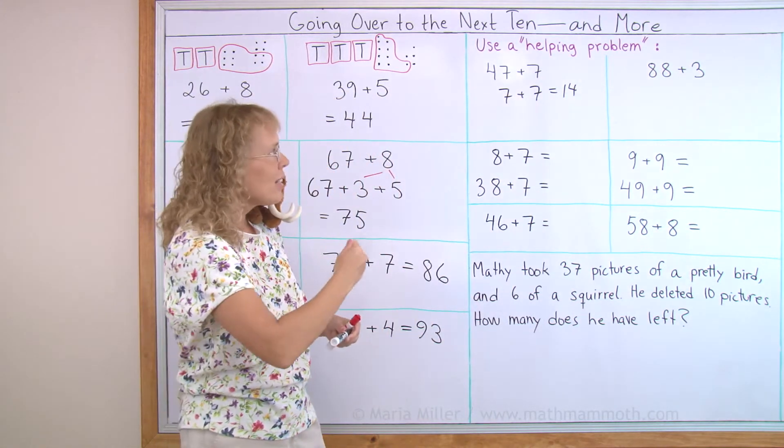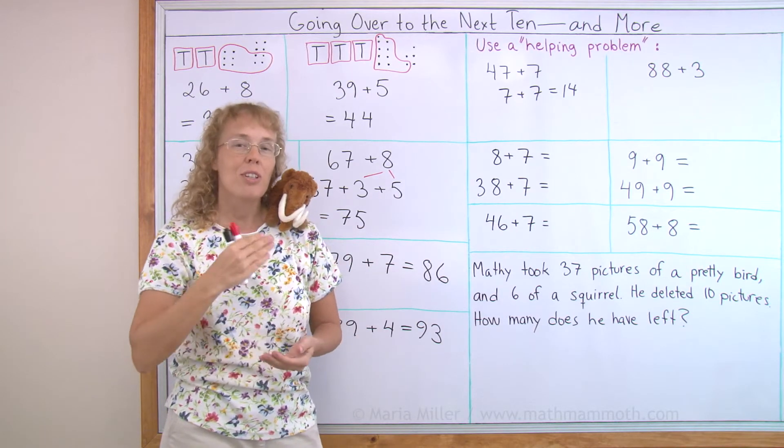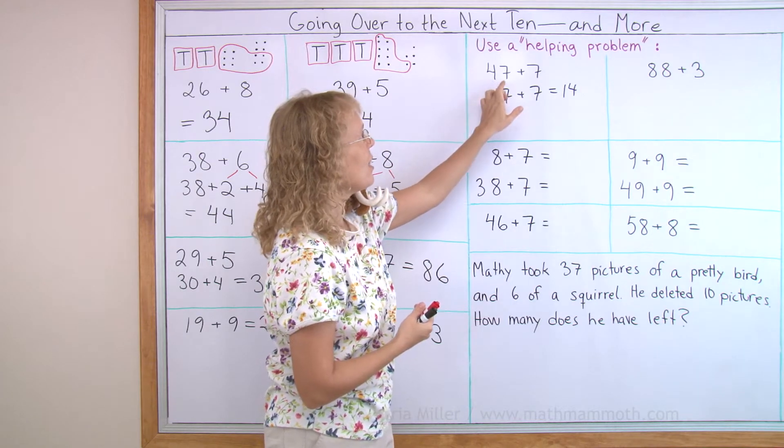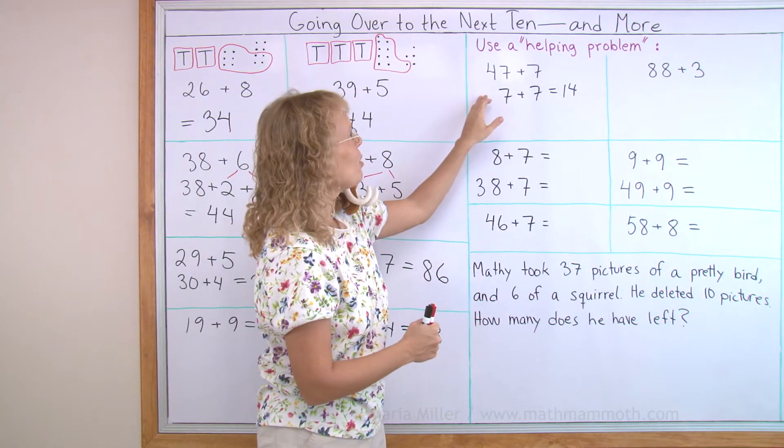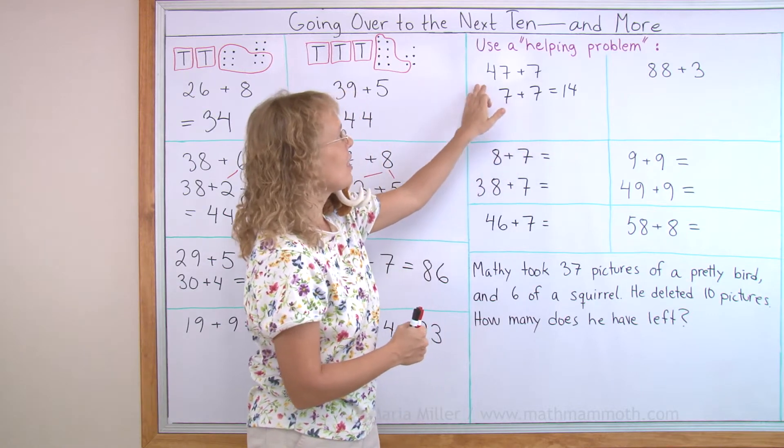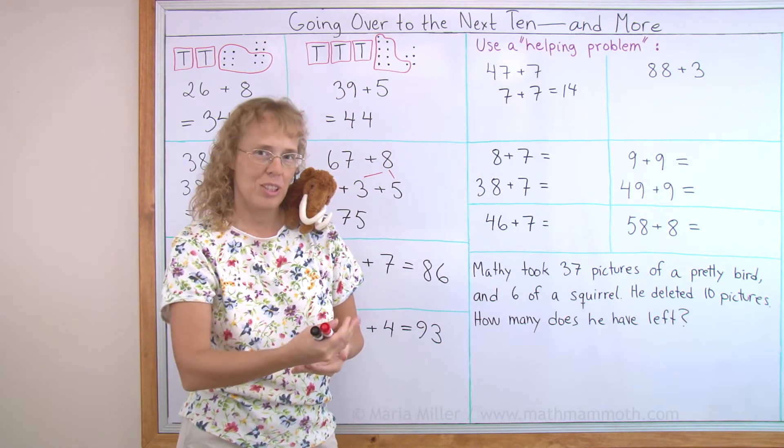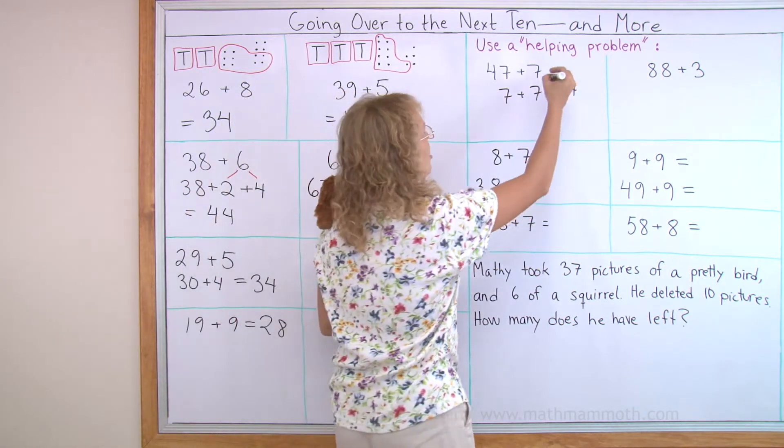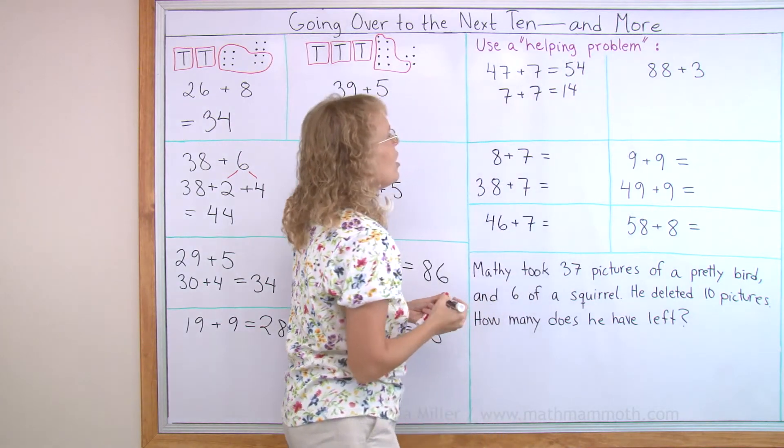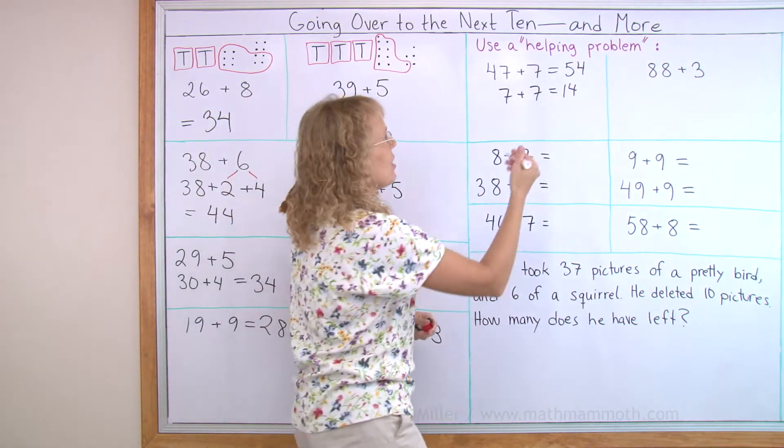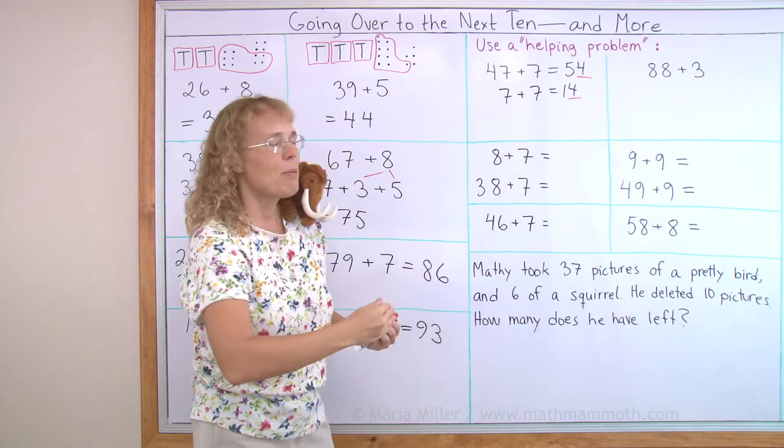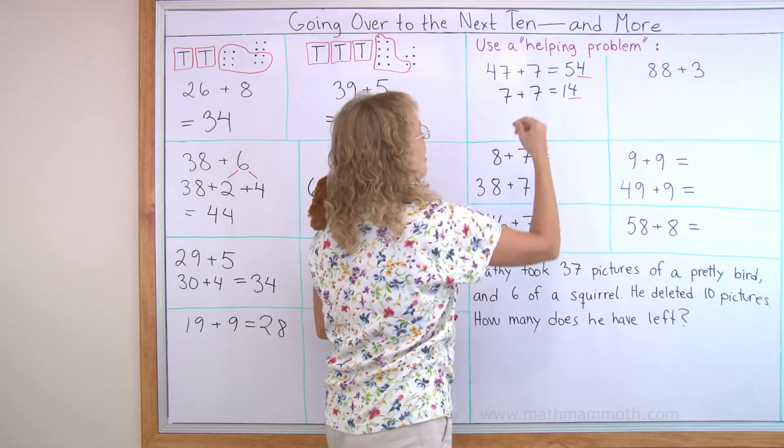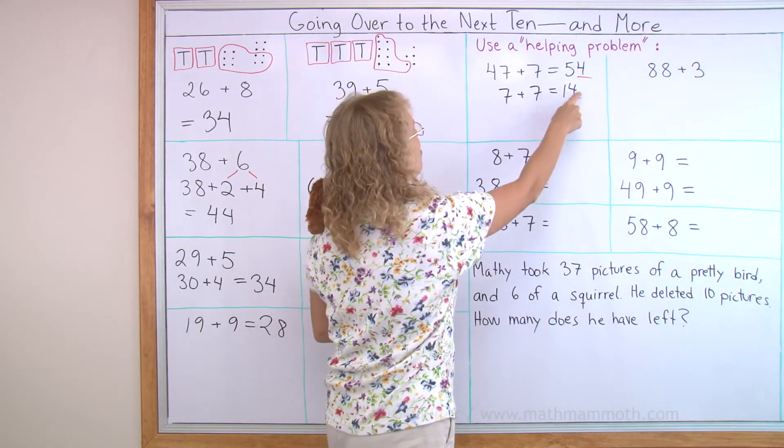And so I will use that to solve 47 plus 7. In 47 plus 7 I have the 40 and then I have the 7 plus 7. And so 7 plus 7 makes 14 and then I have the 40. I have 40 and 14 to add, that will be 54. The answer to this original problem is 54. Notice both of them end in 4, and both of them went over to the next 10.